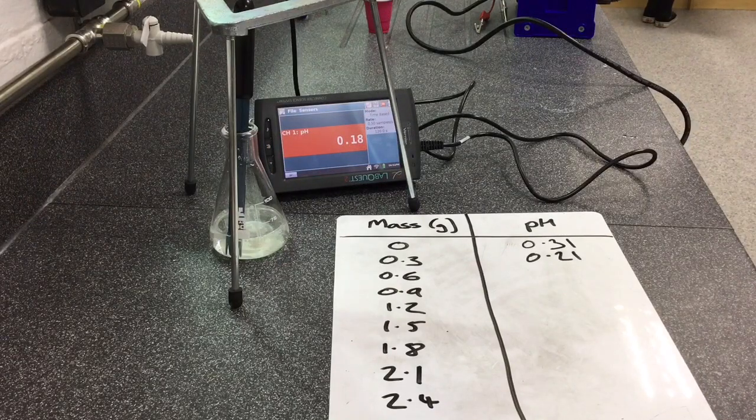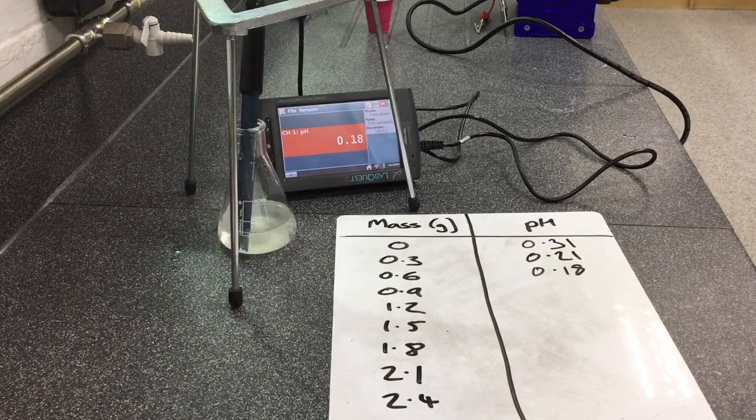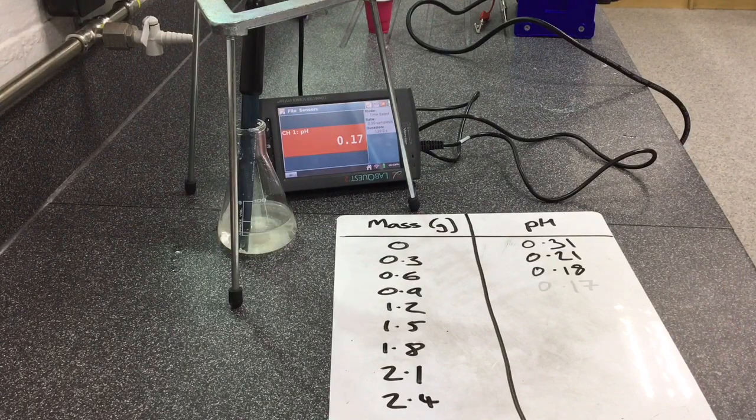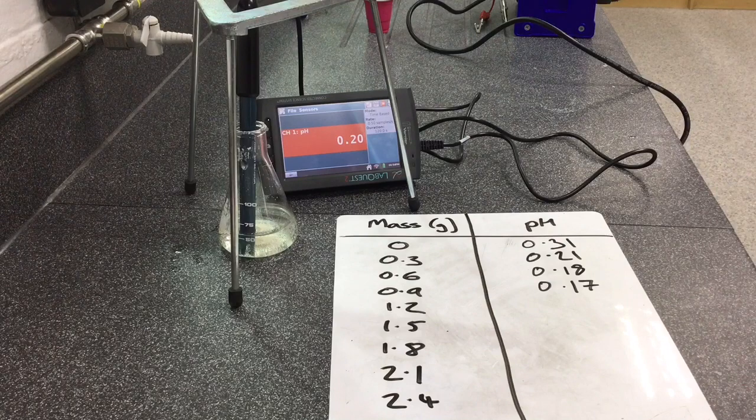We will then gradually add 0.3 grams of the calcium hydroxide while simultaneously recording the pH and observing any pH changes.